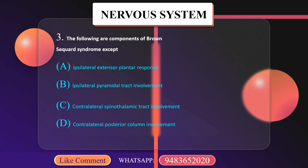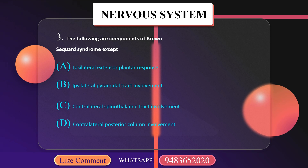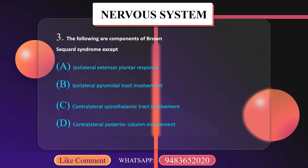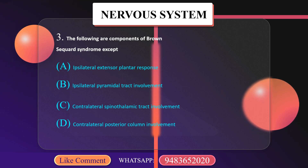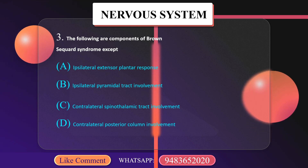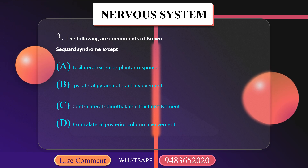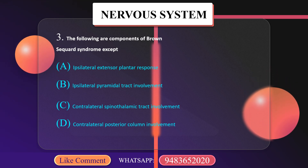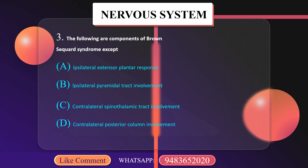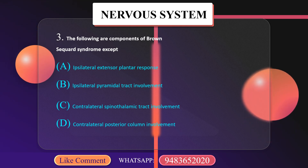The following are the components of Brown-Séquard syndrome except: ipsilateral extensor plantar response, ipsilateral pyramidal tract involvement, contralateral spinothalamic tract involvement, contralateral posterior column involvement.